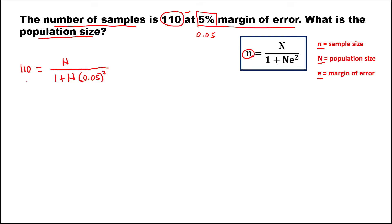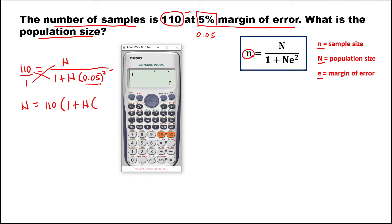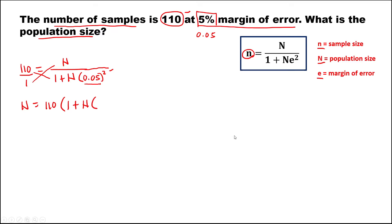To simplify, we can do cross multiplication. So this is over 1, then multiply. We have N equals 110 times 1 plus N times 0.05 to the power 2. We have 0.05 to the power 2, that's 0.0025.